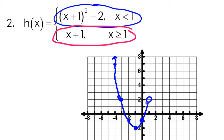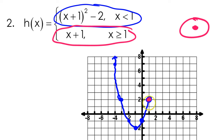Notice — this closed circle lands right on the open circle that was there. Don't try to make an open circle with a closed circle on the inside. If you have an open circle and a closed circle, guess what? It's just a closed circle. Period. Just a closed circle.